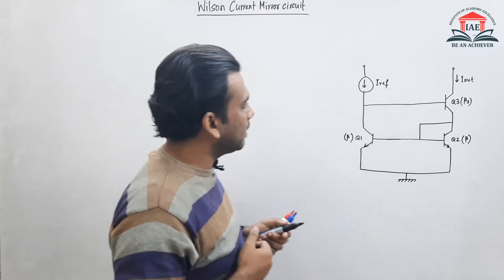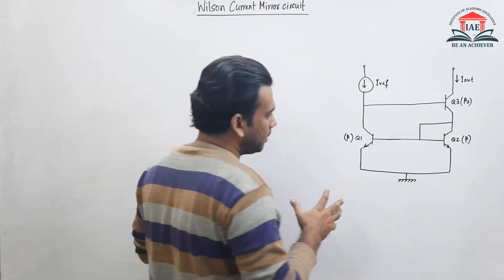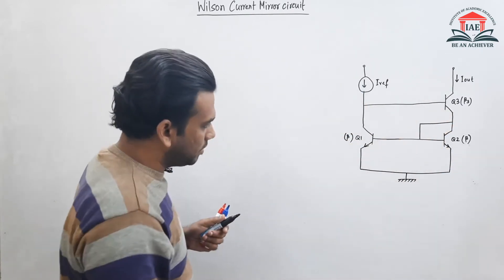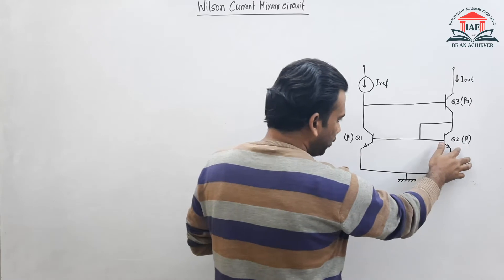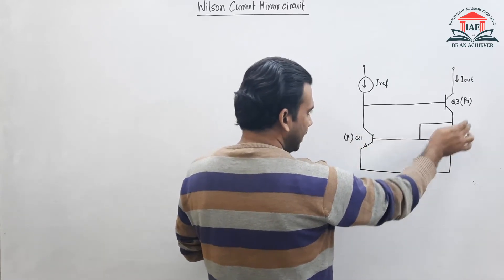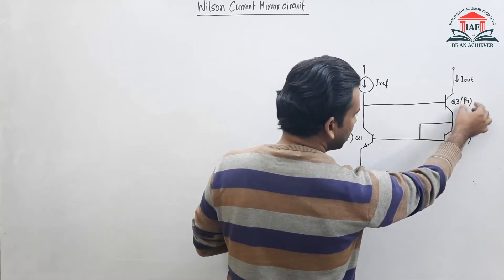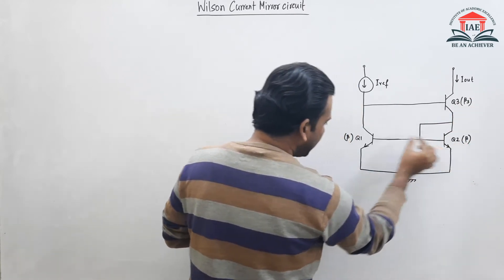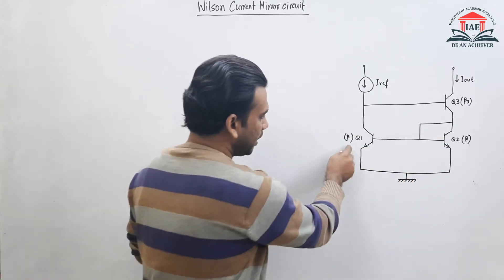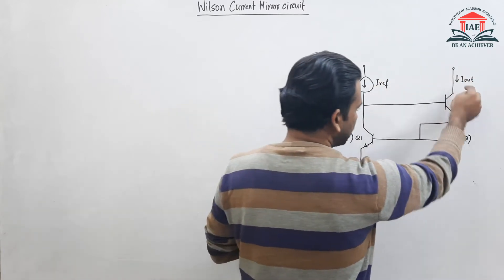Let us see what the Wilson current mirror circuit looks like. The circuit has three transistors: Q1 and Q2 are matched transistors with current gain beta, and Q3 has a current gain of beta3. The I-reference current and I-out current are also labeled.